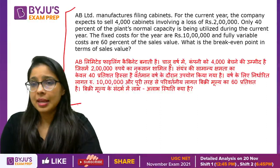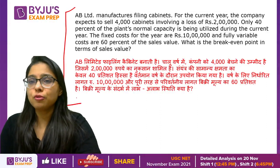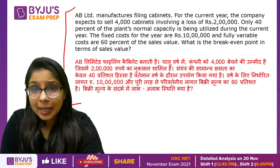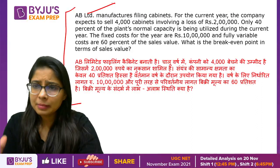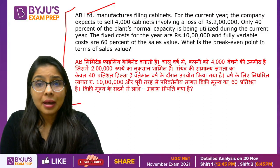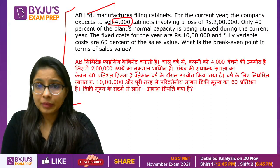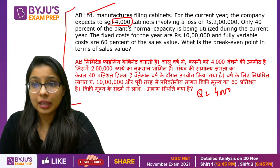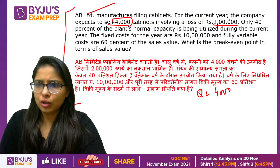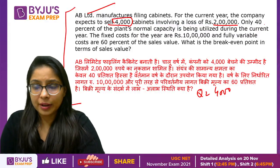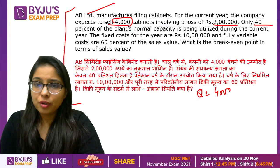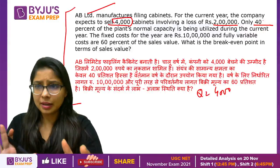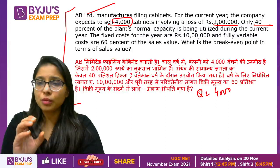You have to focus on what you are going to ask — what information is given to you. AB Limited is a manufacturing cabinets company. For the current year, the company expects to sell 4,000 units, involving a loss of 2 lakh rupees. 40% of the plant's normal capacity has been utilized in this current year.